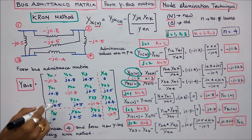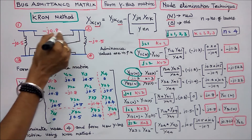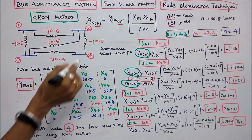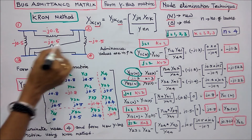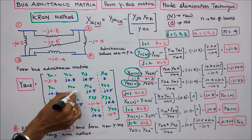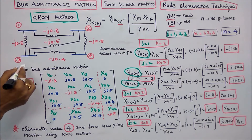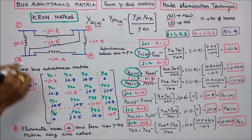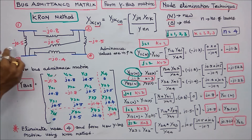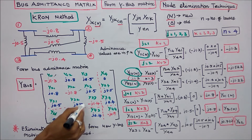The next diagonal element is Y22. Three lines are connected to bus 2: minus j0.5, minus j0.5, minus j0.8, giving Y22 equal to minus j1.8. For Y33, three lines are connected: minus j0.5, minus j0.5, minus j0.4, giving Y33 equal to minus j1.4.